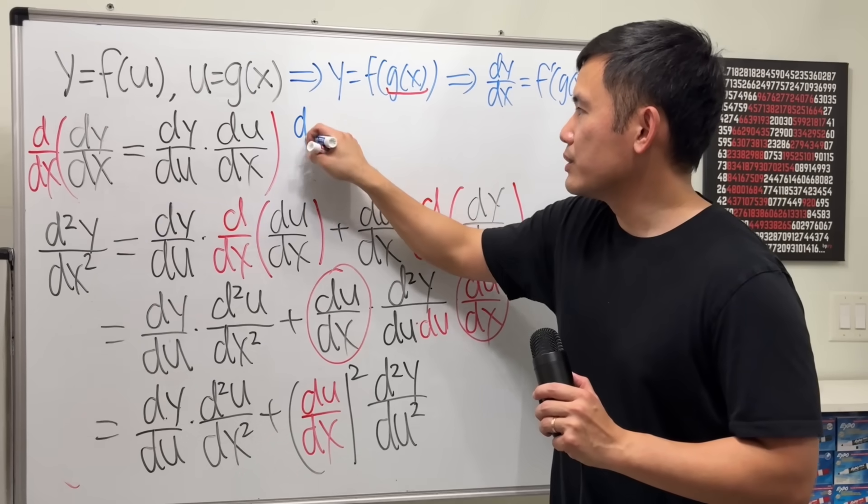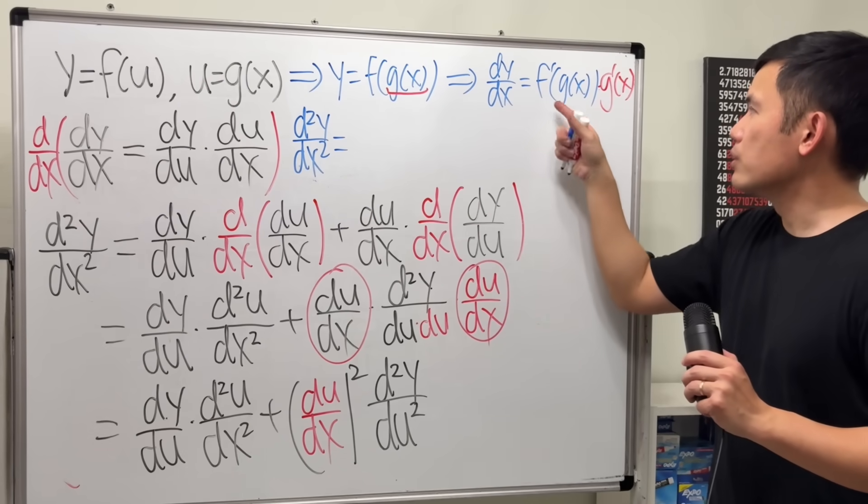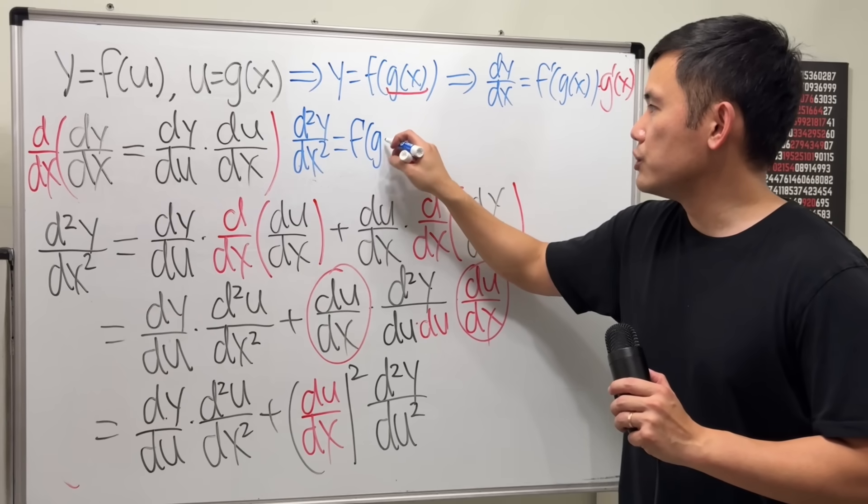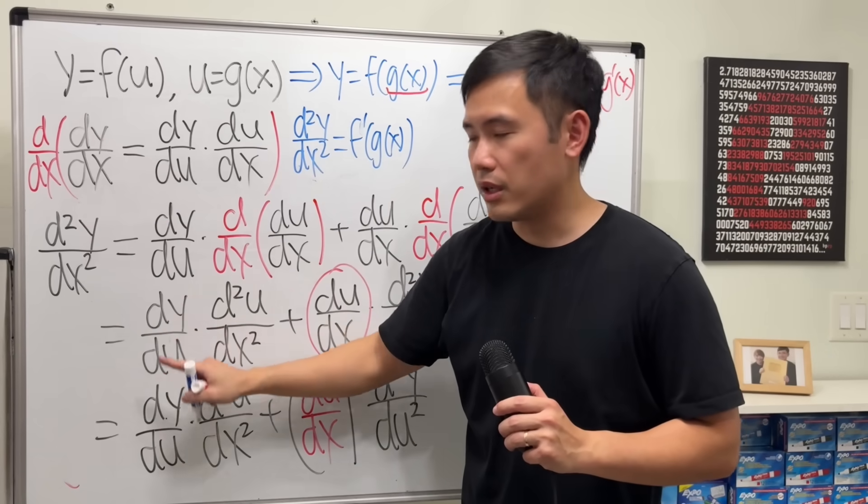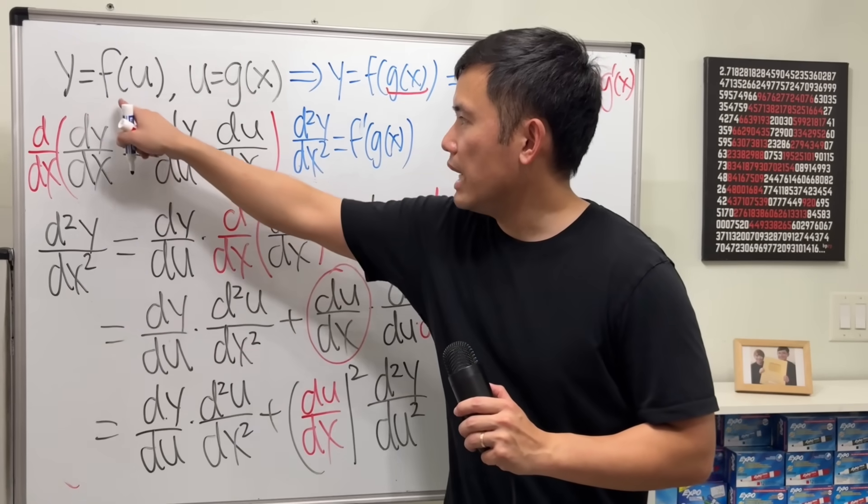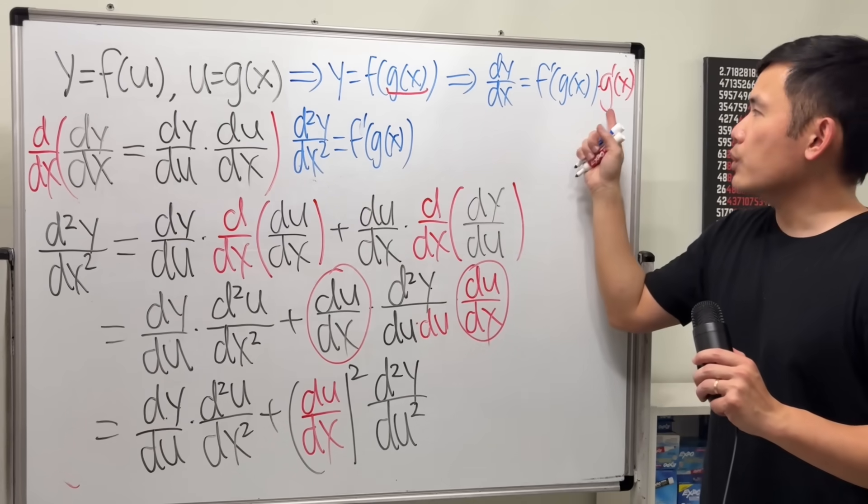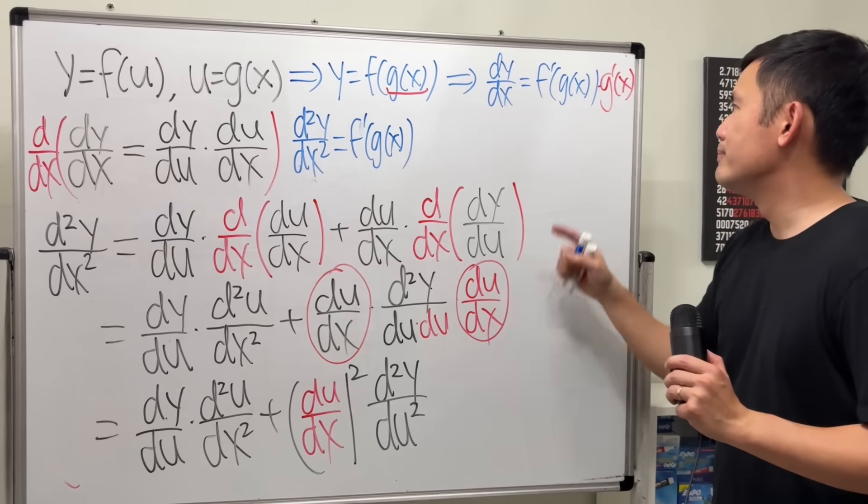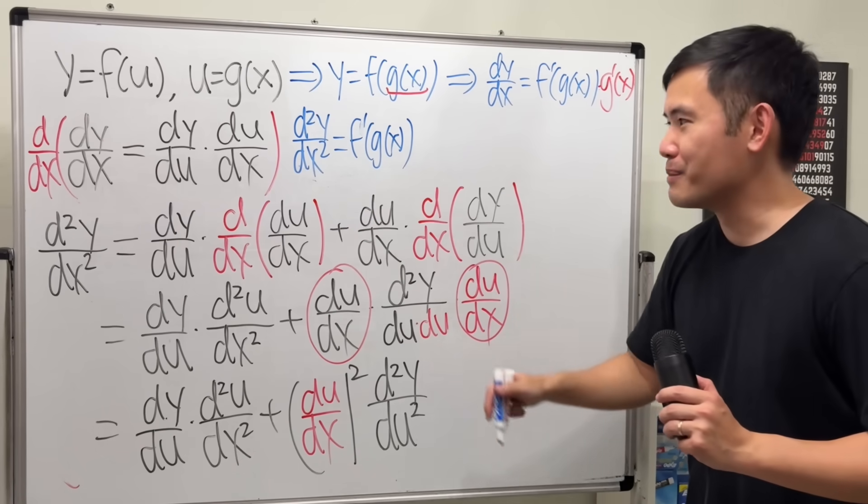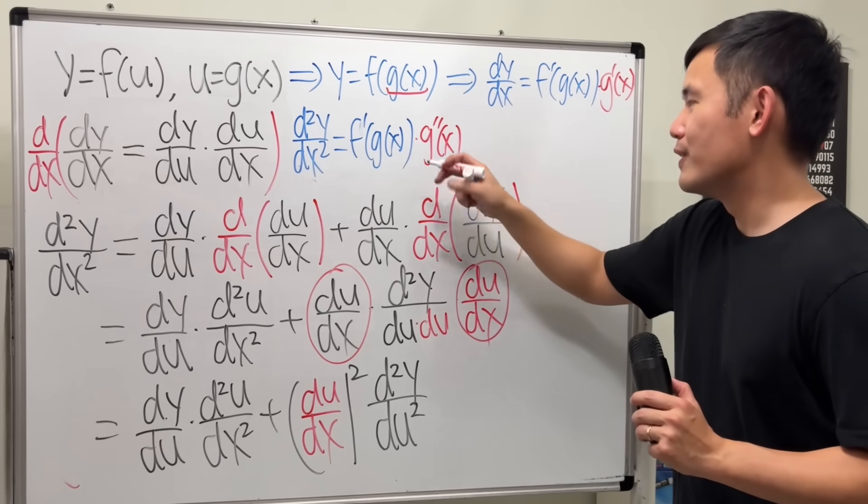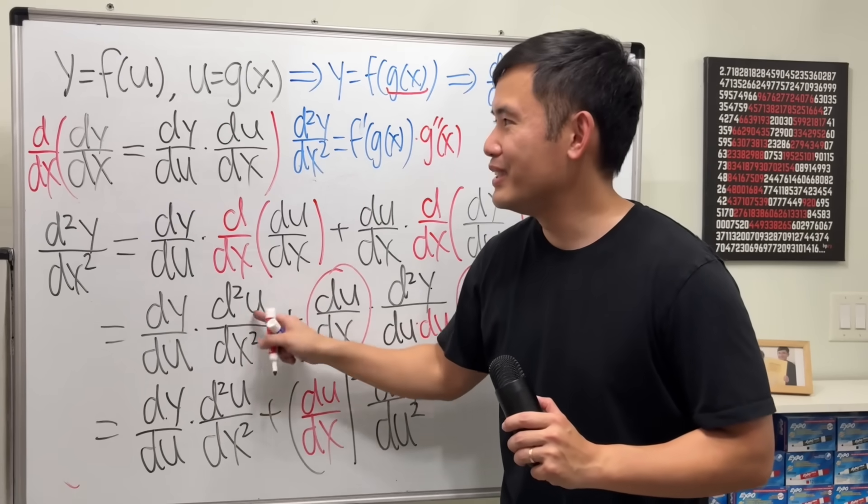Now, to get d2y dx2, we have to differentiate this again. So, use the product rule, I will keep the first function, f prime of g of x. And this right here is precisely what we have right here. dy du. y is f, and now we are doing it with respect to u. The input is the u. And then, we have to multiply by the derivative of the second. This is the second function. Take the derivative of that. All we have to do is put another prime. So, multiply by g double prime. So nice. And this is exactly what we have right here. d2u dx2. u is the g function.